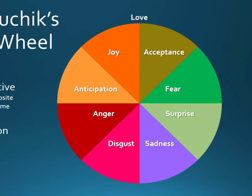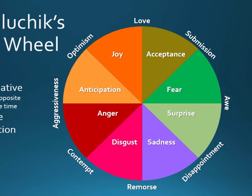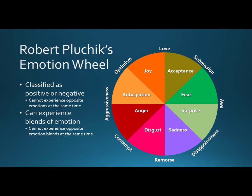In the same way, combining acceptance and fear produces submission, fear and surprise result in awe, surprise and sadness produce disappointment, sadness and disgust create remorse, disgust and anger turn into contempt, anger and anticipation yield aggressiveness, and anticipation and joy produce optimism. And again, Plutchik believes that contradictory blended emotions, such as love and remorse, cannot exist at the same time.